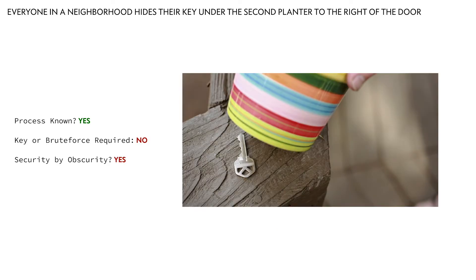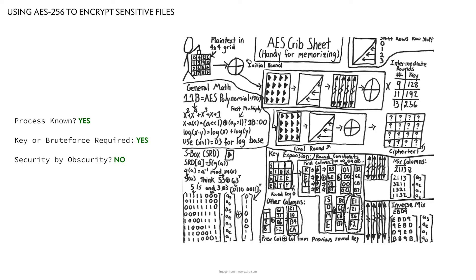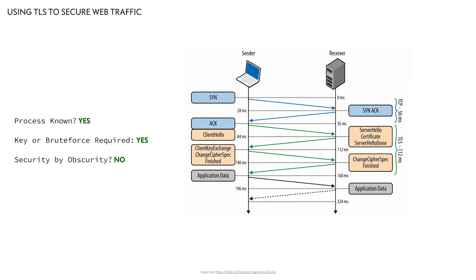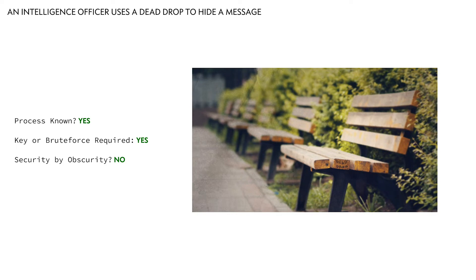The reason having everyone in a neighborhood put a key under a planter is bad security is because you don't need any more information once you know how that system works — you're getting access just by knowing the process. With AES, the algorithm is completely known, but the attacker doesn't have the key to do decryption. It's also fine for people to know you're storing sensitive files in a locked document vault, because they still have to get into the vault. Using TLS is fine because it uses well-known protocols with keys that are kept secret. Dead drops are secure in sufficiently large spaces because even if you know there's a dead drop somewhere in a city, there are too many places to look — you're back to brute force.